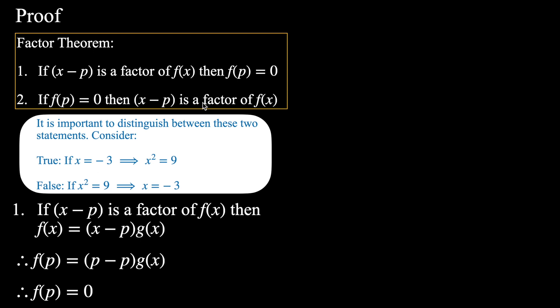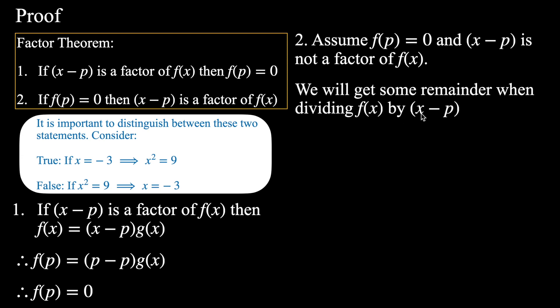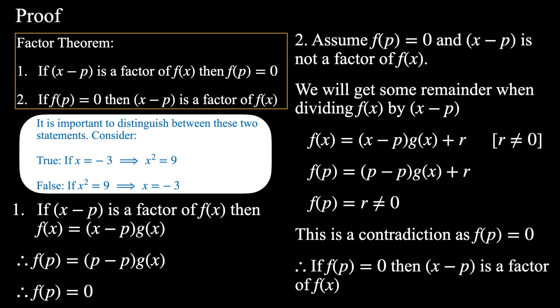For the second statement, I'll use proof by contradiction. Assume f(p) = 0 but x minus p is not a factor of f(x). Then dividing f(x) by (x − p) gives a remainder r ≠ 0, so f(x) = (x − p)·g(x) + r. Substituting x = p: f(p) = 0·g(p) + r = r ≠ 0. But we assumed f(p) = 0 — a contradiction. Therefore x minus p must be a factor of f(x) if f(p) = 0.